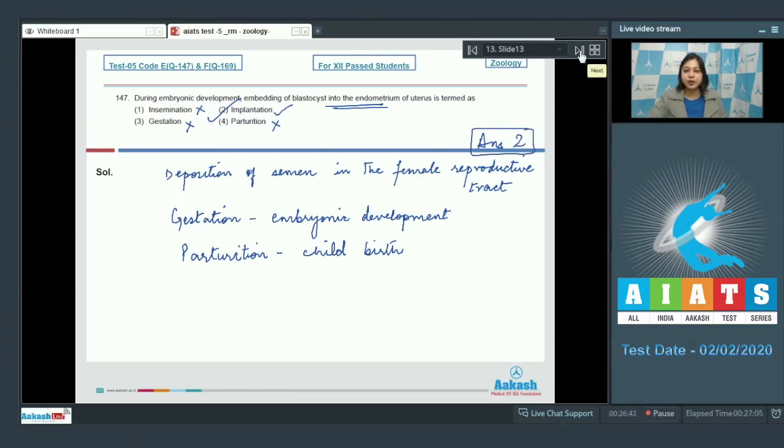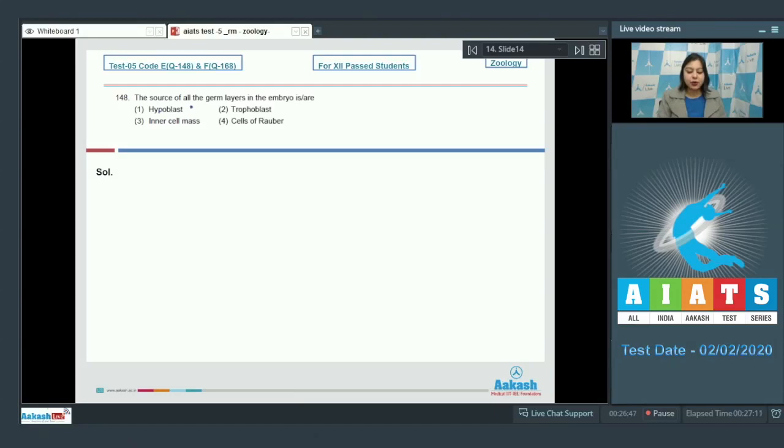Proceeding to the next question. Question number 148. The source of all germ layers in the embryo is or are?